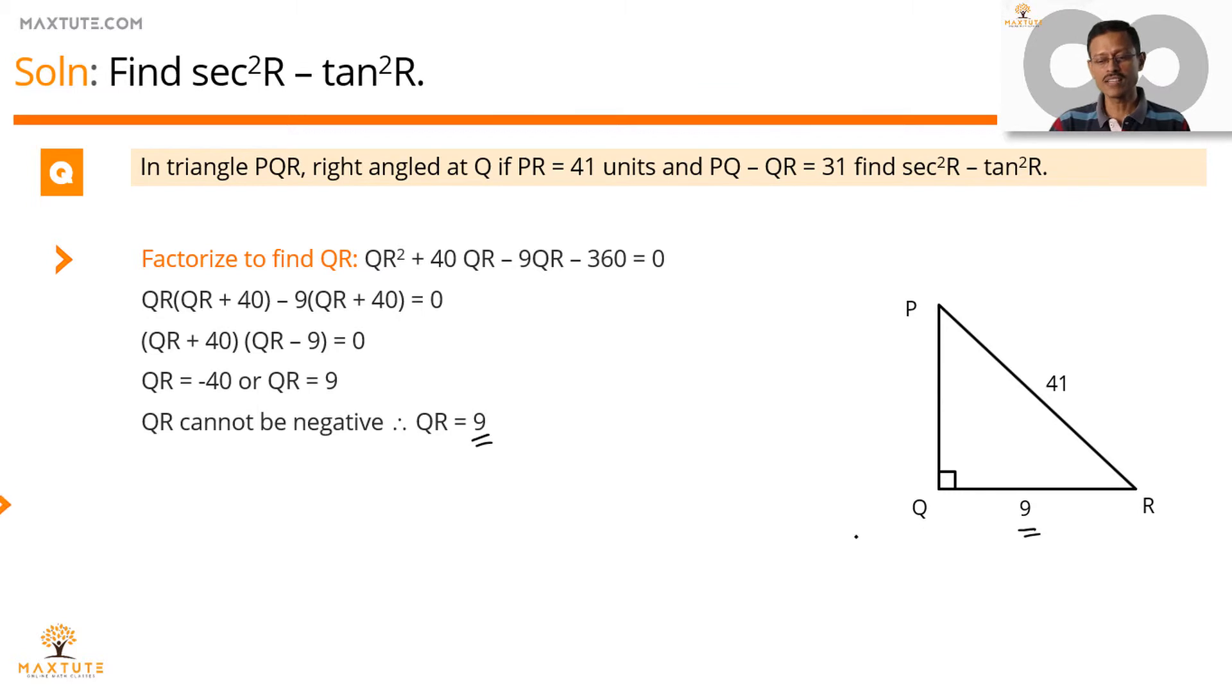To give us QR to be equal to 9. If you know QR equals 9, you can find the value of PQ to be equal to QR plus 31, which is 9 plus 31, which is equal to 40. So measure of all three sides are available to us.